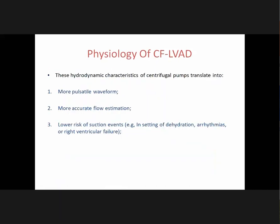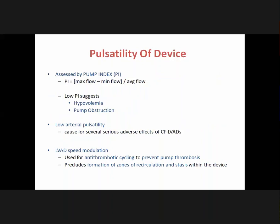Physiology of continuous flow LVAD: the hydrodynamic characteristics of centrifugal pumps produce a more pulsatile waveform, more accurate flow estimation, and lower risk of suction events in settings of dehydration, arrhythmias, or right ventricular failure. Pulsatility is calculated as the pump index — maximum flow minus minimum flow divided by average flow. A low pump index suggests hypovolemia or pump obstruction. Low arterial pulsatility is associated with several serious adverse effects. Speed modulation is used for antithrombotic cycling to prevent pump thrombosis and prevent zones of recirculation and stress within the device.